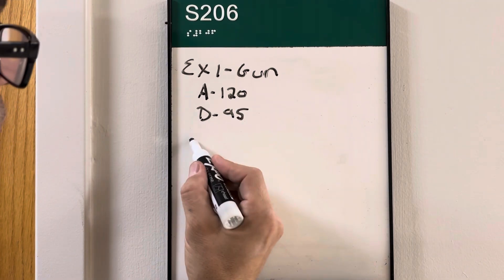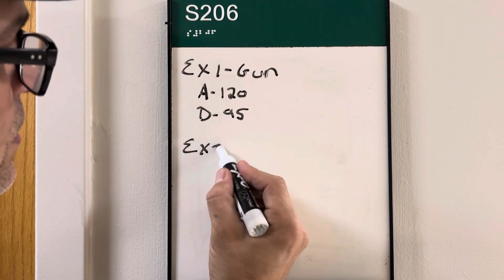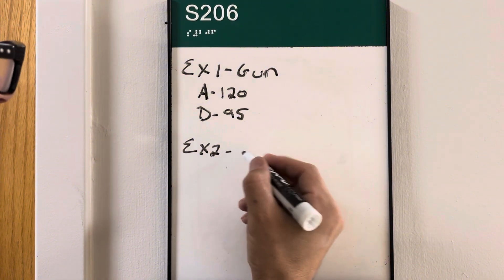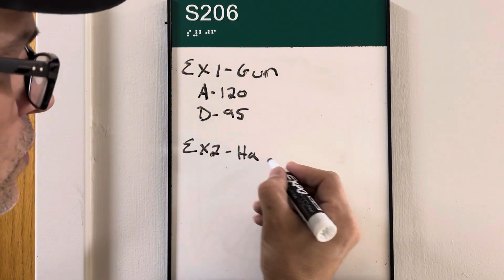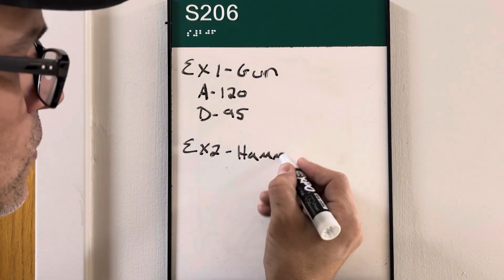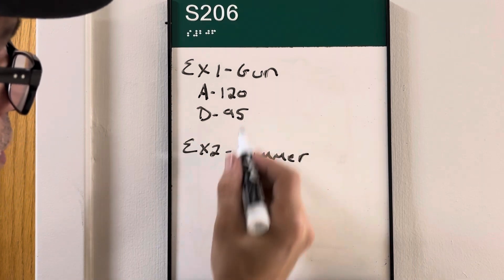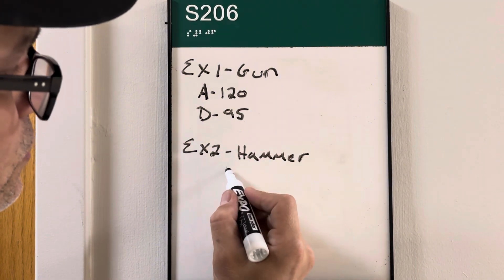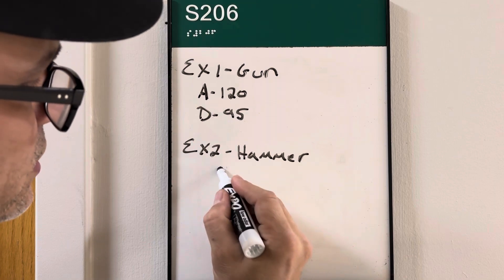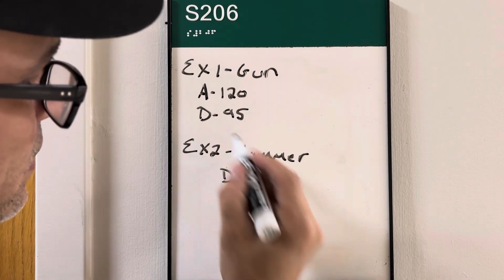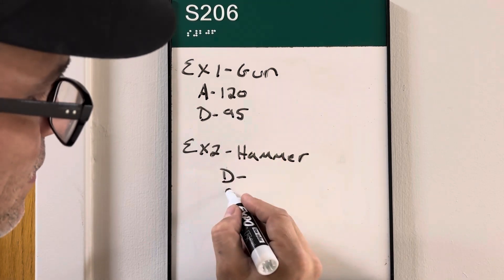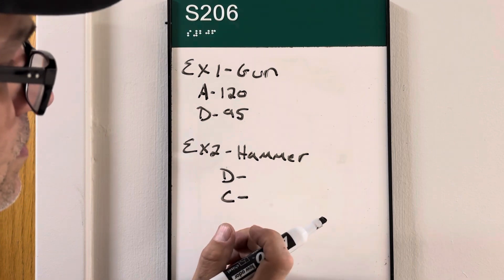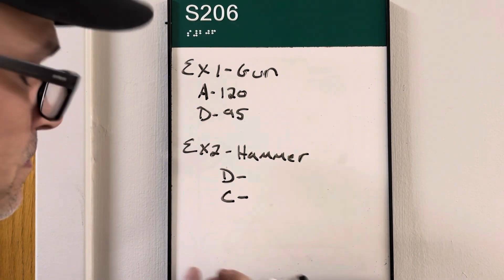We're going to do the same for exhibit two — let's say it was a hammer. We're going to measure from those corners, whatever corners were used. So let's say it was D — you'd write the number — and then we measured from C — you'd write that number too. This is going to be your key.